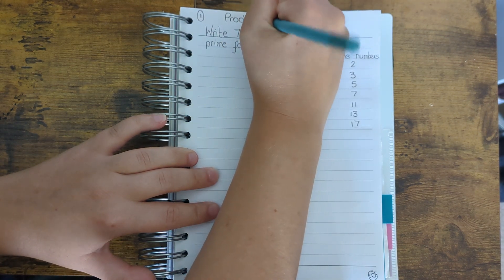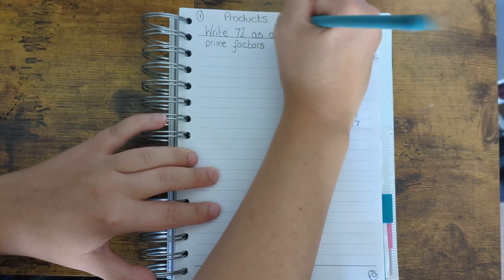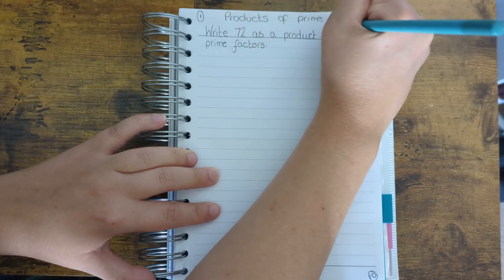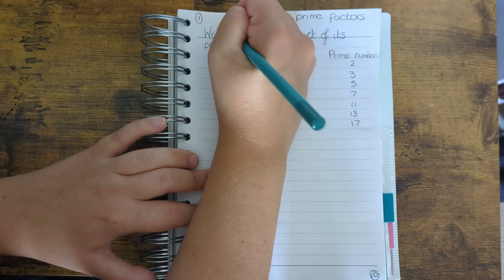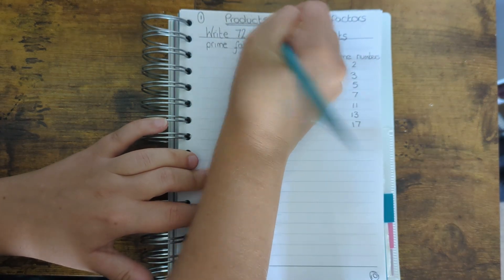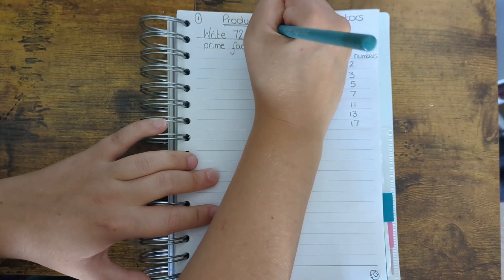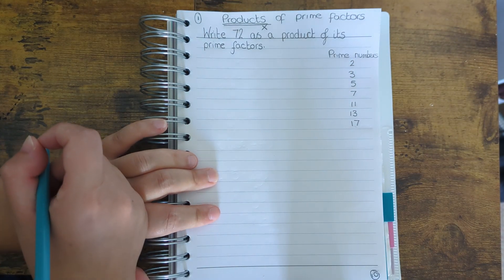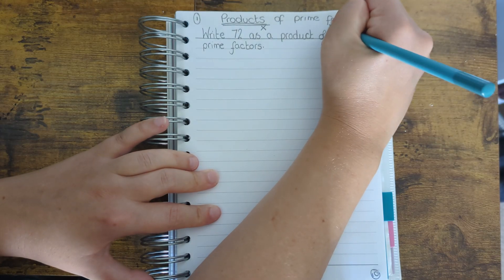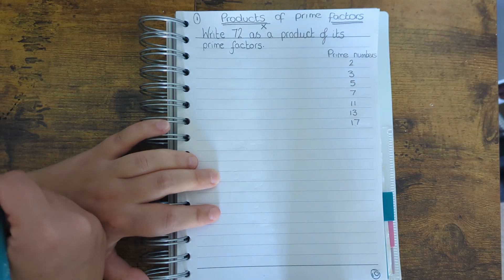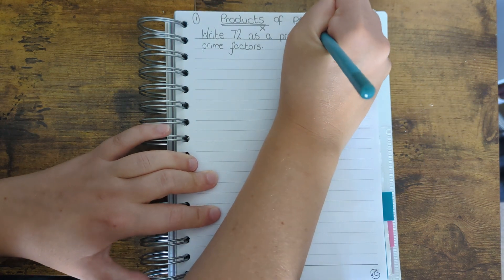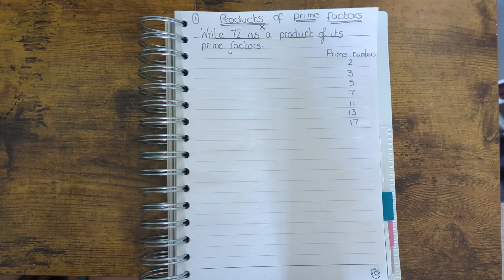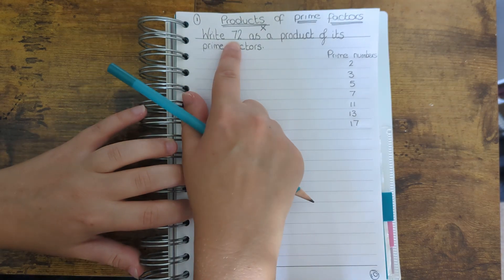Hi everyone. This video is a guide on how to find the products of prime factors. First of all, we're going to talk about what that actually means. Product is basically a posh word for multiply. A factor is a number that divides into another number exactly — for example, 2 is a factor of 10. And a prime number is a number only divisible by 1 and itself. So for the products of prime factors, we need to find prime numbers that multiply to make a given number.